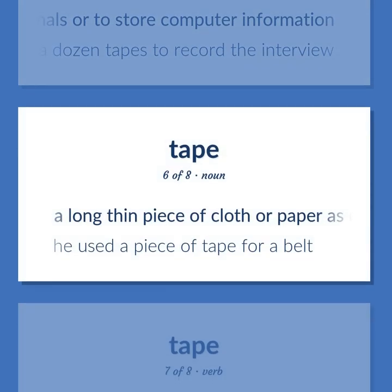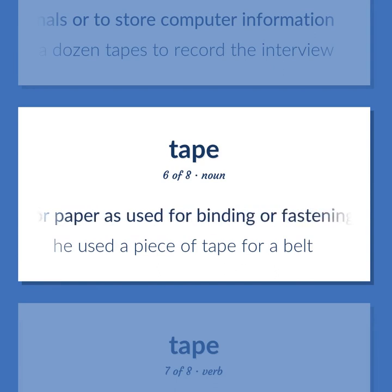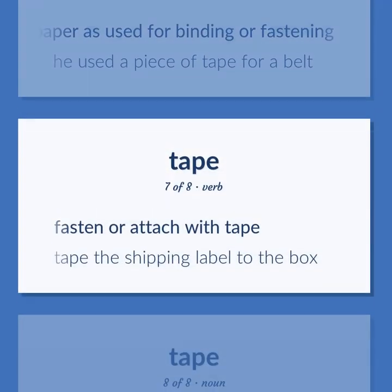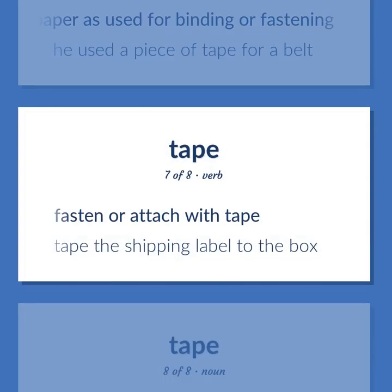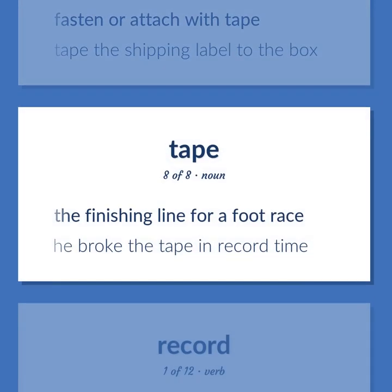A long thin piece of cloth or paper used for binding or fastening. He used a piece of tape for a belt. Fasten or attach with tape. Tape the shipping label to the box. The finishing line for a foot race. He broke the tape in record time.